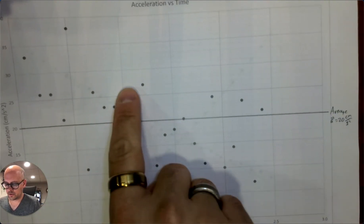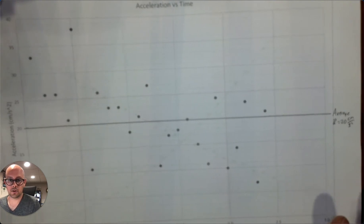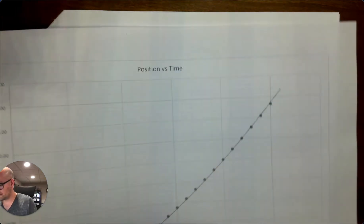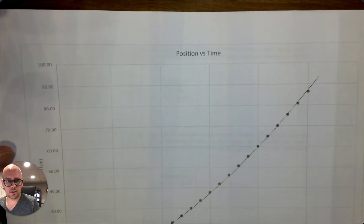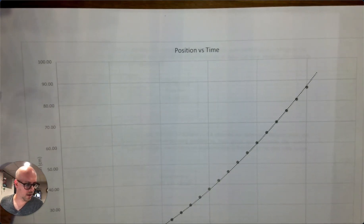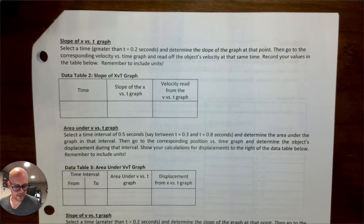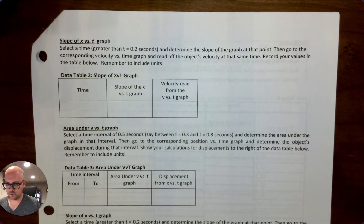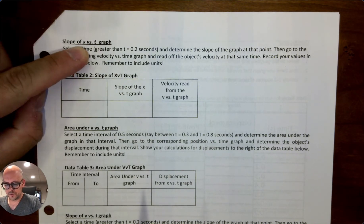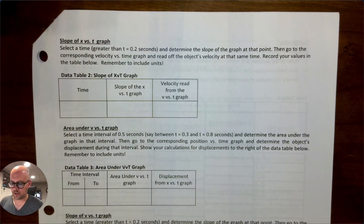You also want to make sure that your graphs have all the grid lines, the major and the minor, because you're going to use them to record some values. Minor light on the printer, I tried to make it so that yours were copied darker. Okay, so let's go through a couple of these and just make sure we understand instructions. Slope of position versus time graph. Select a time greater than 0.2 seconds.